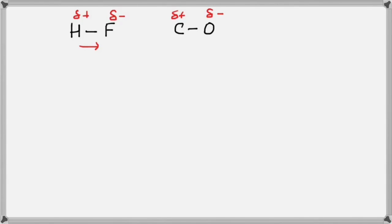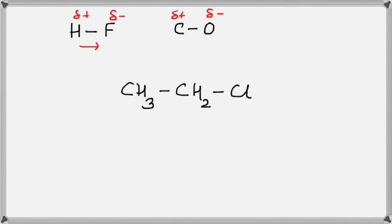Now let's consider the compound CH3CH2Cl and use this effect to see what happens in the molecule. The bond between carbon and chlorine — chlorine is more electronegative — so chlorine attracts the electrons towards itself and gets a slightly negative charge. Because of that, the adjacent carbon gets a slightly positive charge because it has lost some electrons.